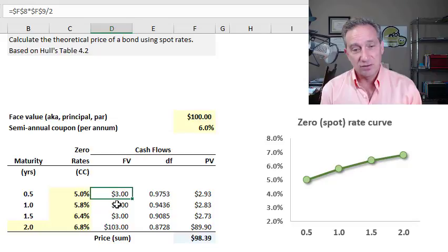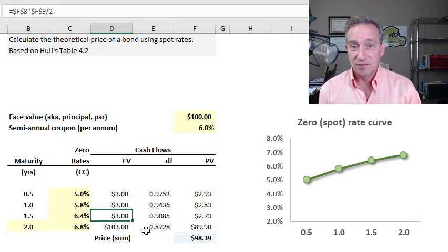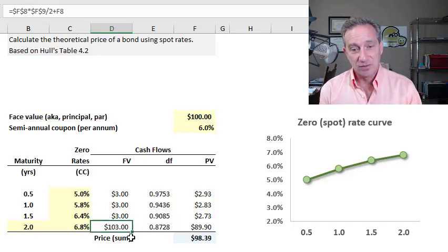So we have a coupon of three dollars at six months, a coupon of three dollars at one year, a coupon of three dollars at 18 months, and then a final cash flow installment that includes the coupon of three dollars plus the return of principal. So for most bonds, most of the cash is in the final installment.